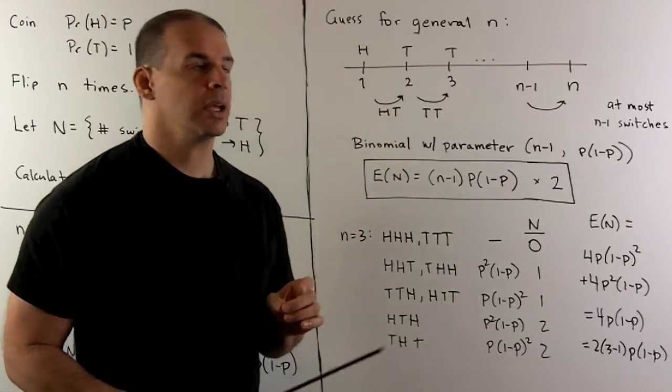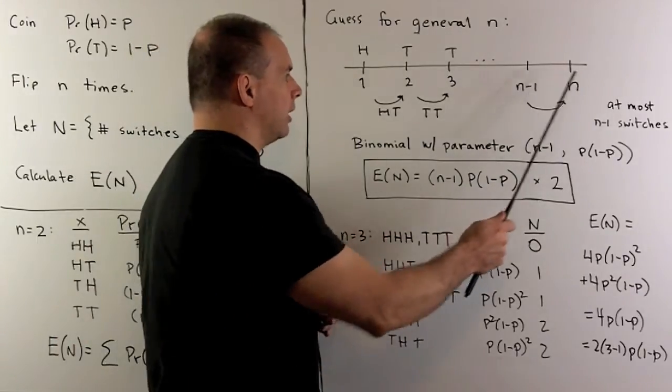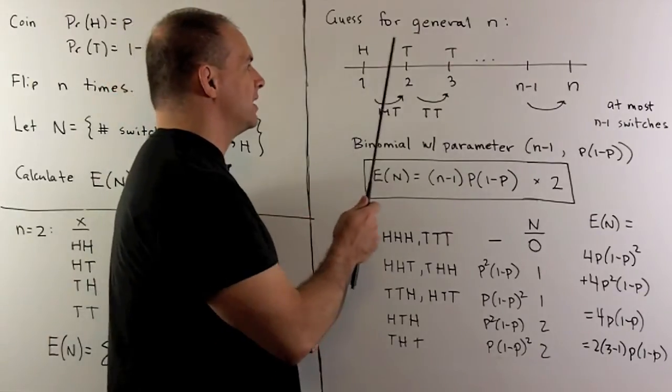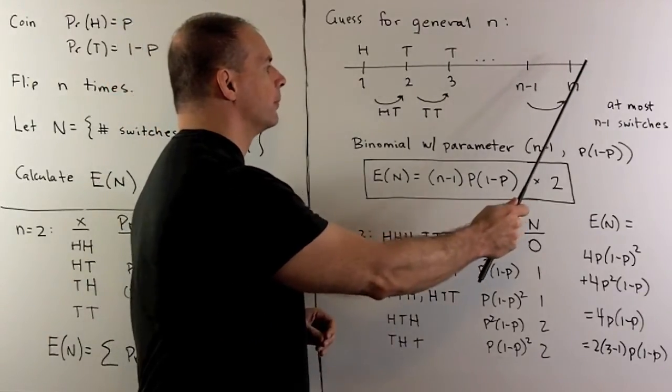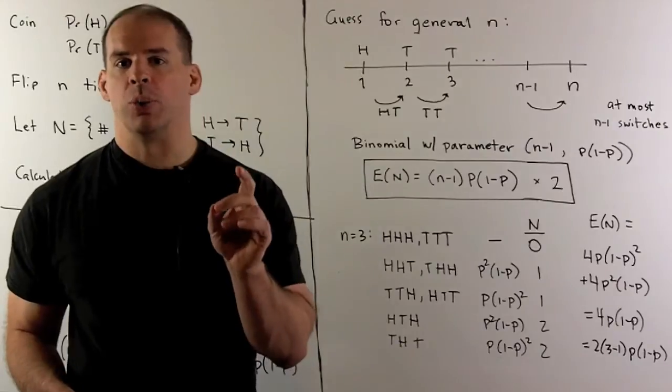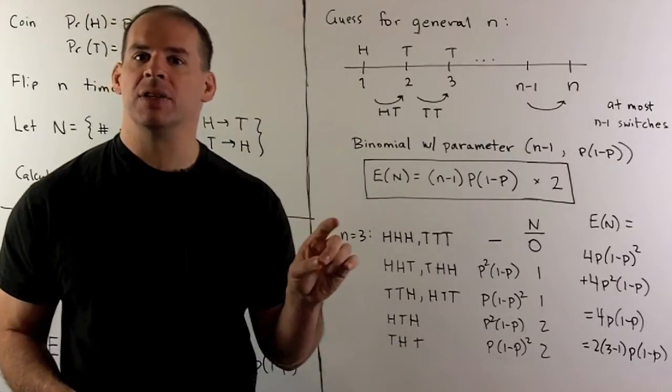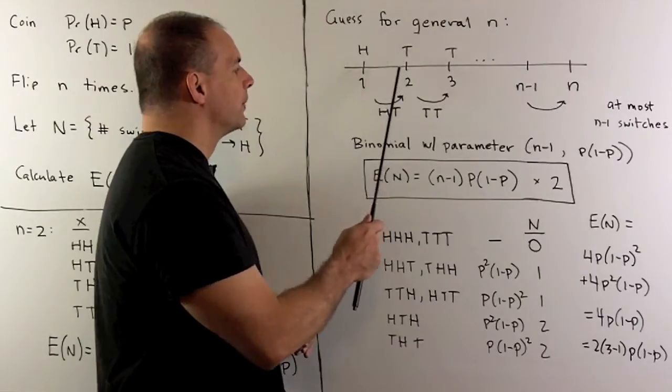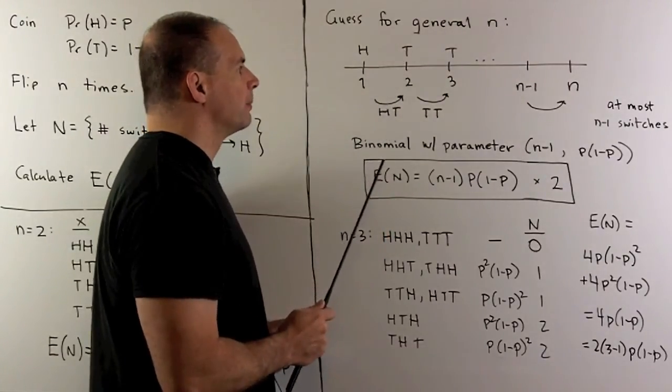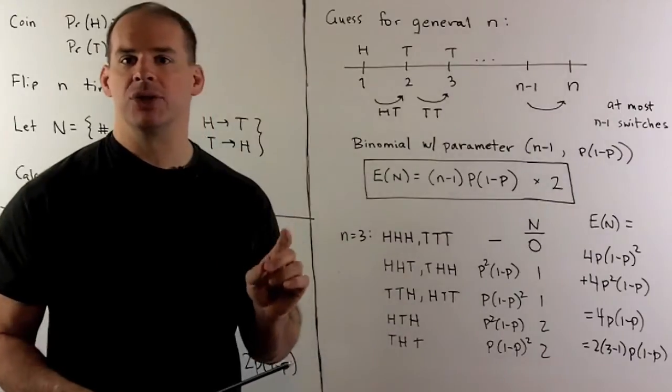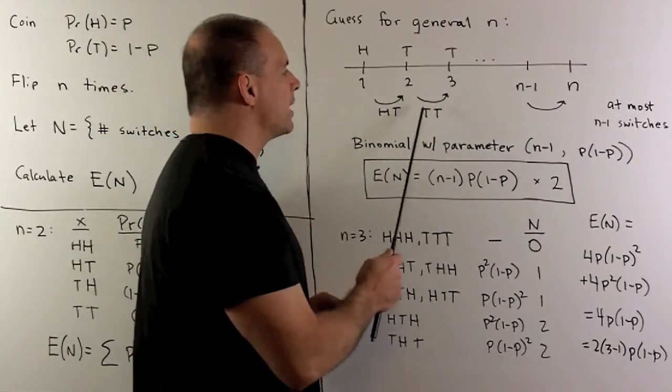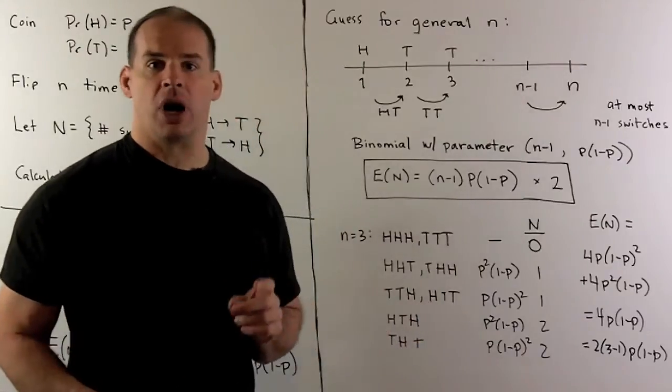For general N, we'll mark off the integers from one to N, representing our flips. So, for instance, we have heads, tails, tails, and so on. Our switches are going to arise in the spaces between our flips. So, in this first space, we have heads going to tails for a switch. In this second space, I have tails going to tails for no switch. That means we have, at most, N minus one switches for any given trial.